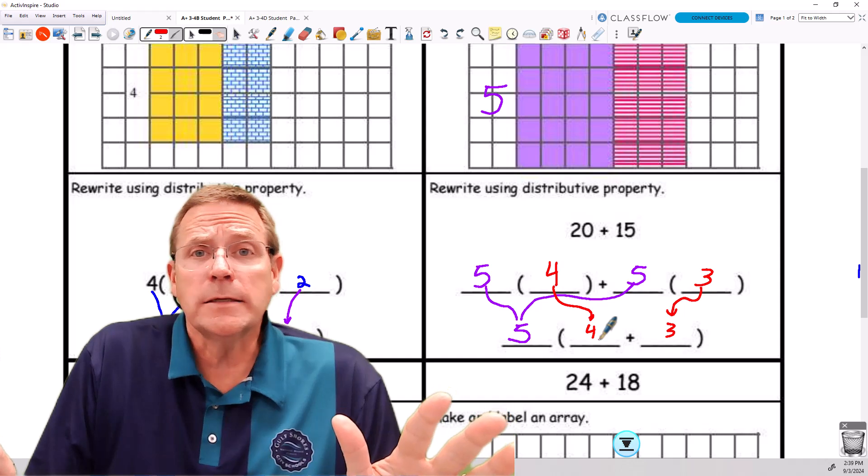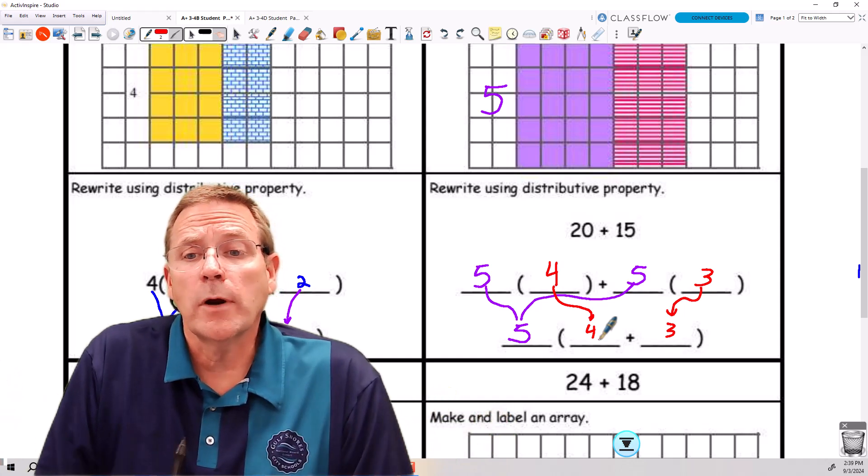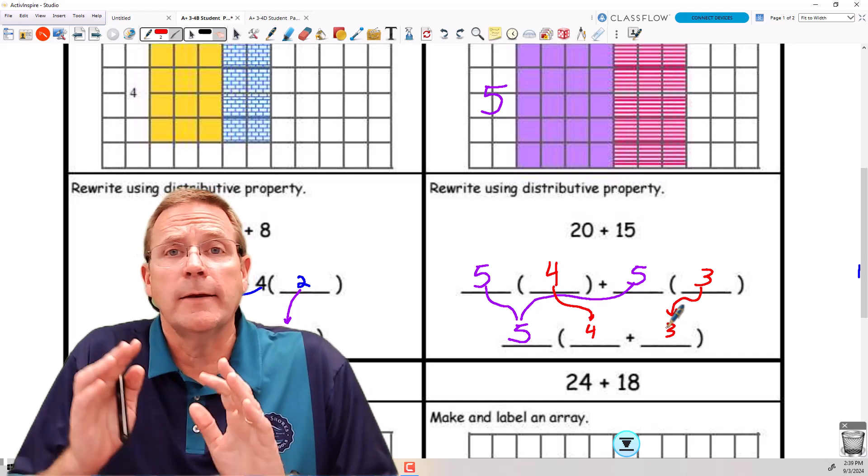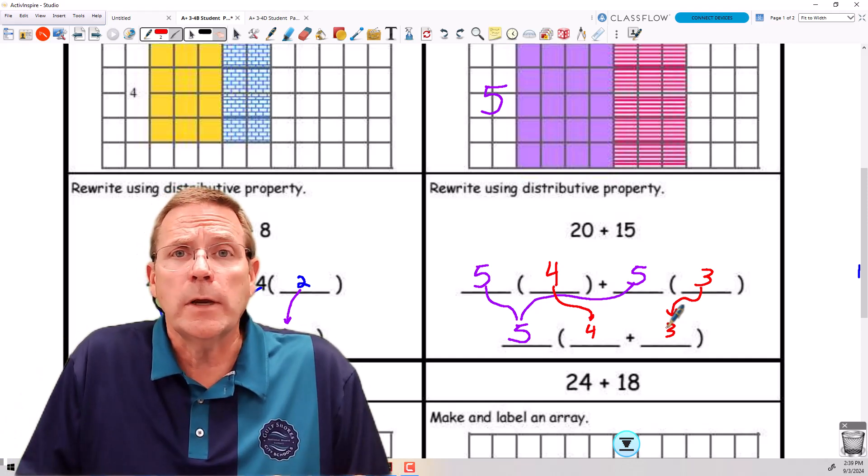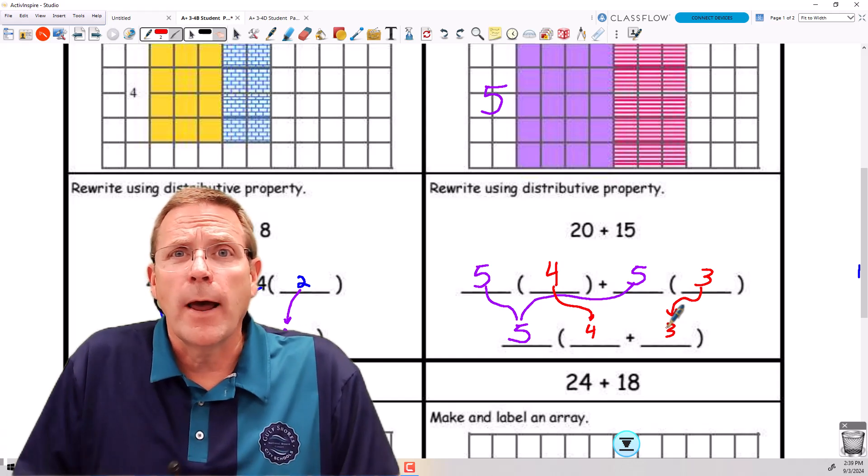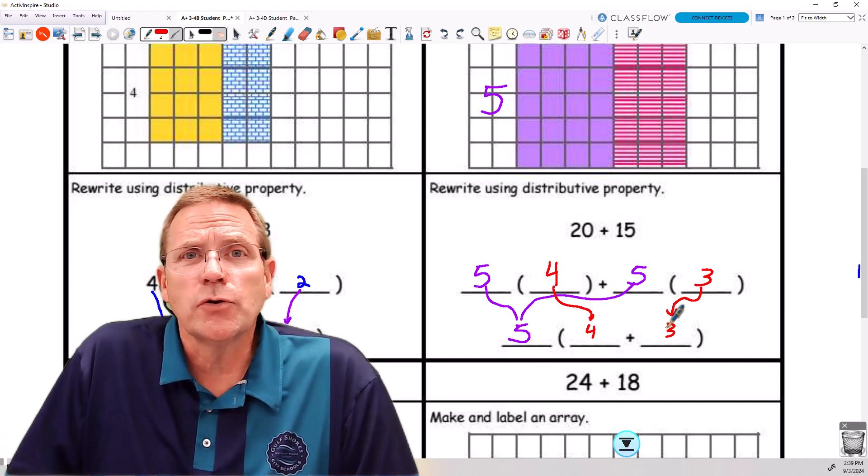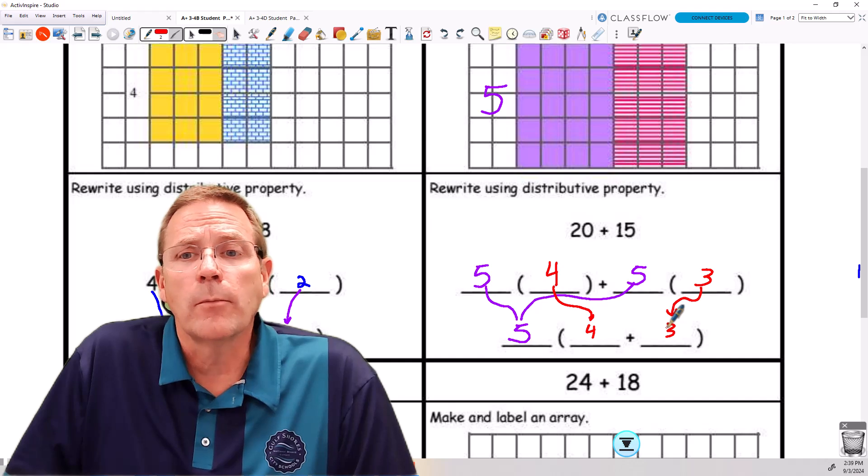Later on, we're going to do all kinds of magnificent things with this, where we're going to be distributing that 5 back through. We're going to add in variables, which are letters that represent numbers. All kinds of wicked things are going to come out of this, but not yet. Right now, we're just making sure you understand how the numbers work this way.